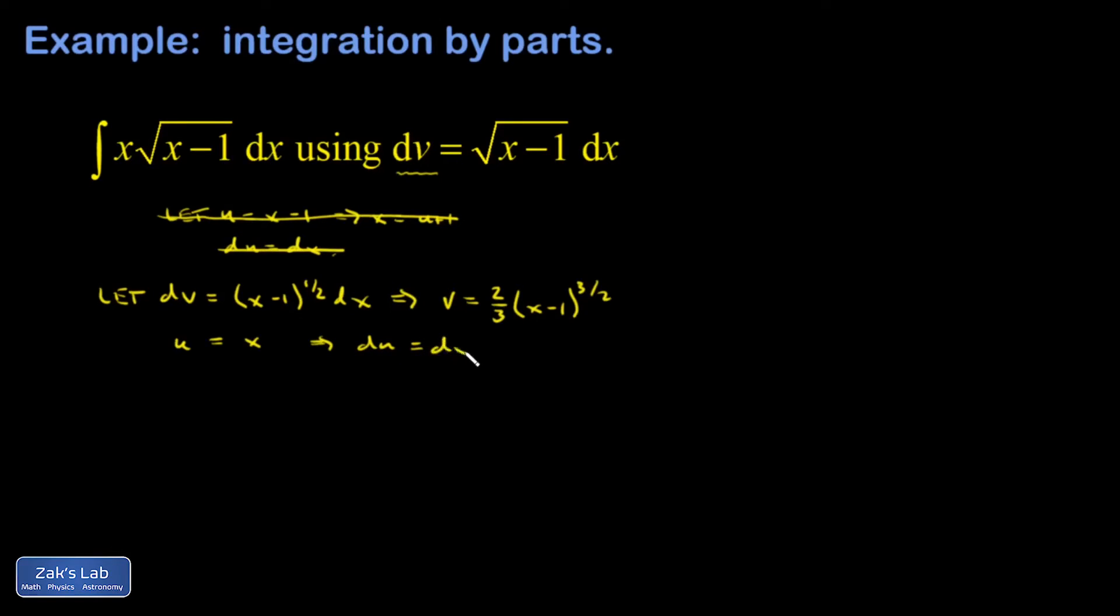So du is dx, and we use the integration by parts formula. We have uv, so 2/3 x times x minus 1 to the 3/2, minus the integral of v du. Now v has a factor of 2/3 on it, so I'm going to bring that out in front and I get x minus 1 to the 3/2. Du is just dx, so I get 2/3 x times the quantity x minus 1 to the 3/2, minus 2/3 times the integral of x minus 1 to the 3/2. That's x minus 1 to the 5/2.